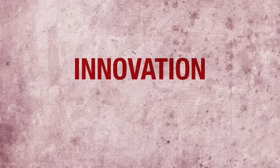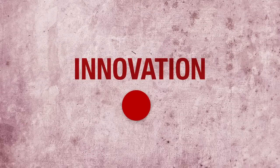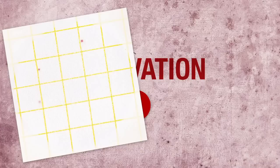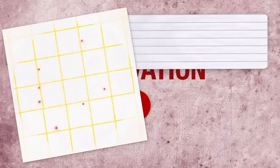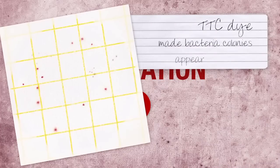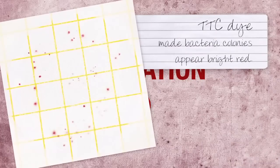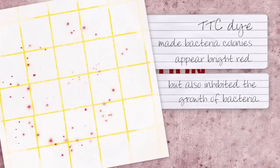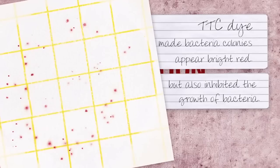Another key innovation had to do with the Petrifilm dot's signature color. At the time of development, it was commonly known in the food safety industry that a special TTC dye made bacteria colonies appear bright red, but also inhibited the growth of certain bacteria, giving the dye limited usefulness as a total plate count indicator.